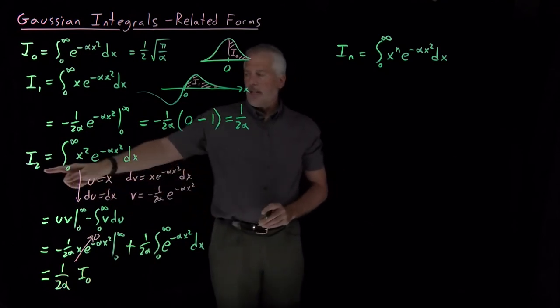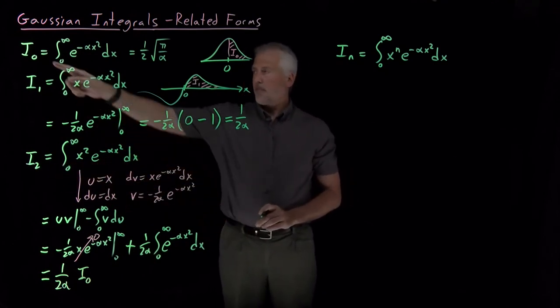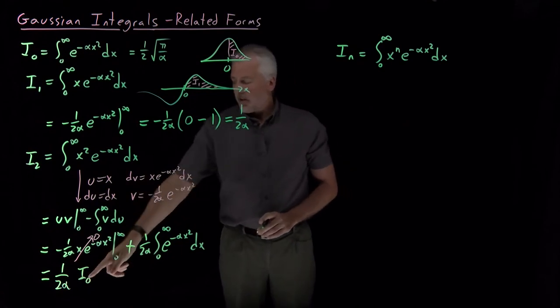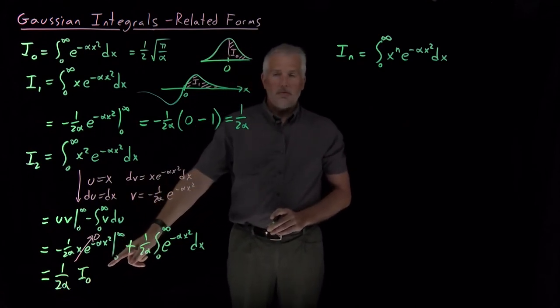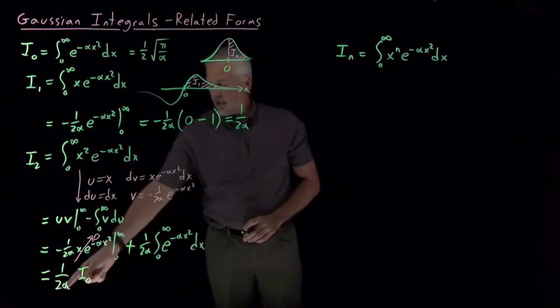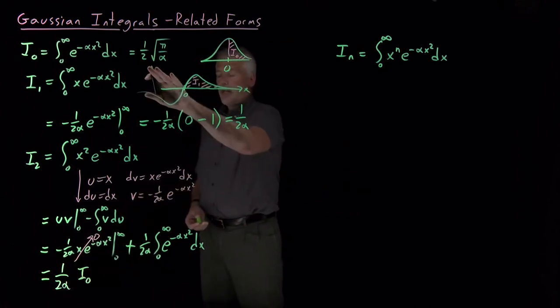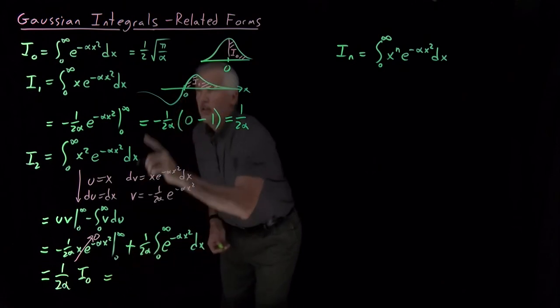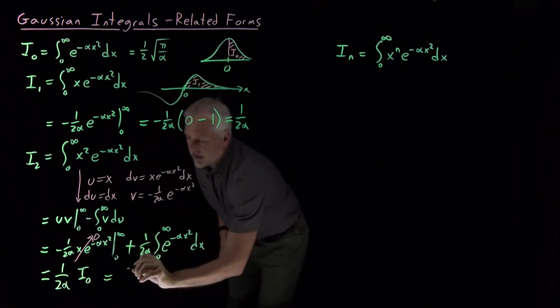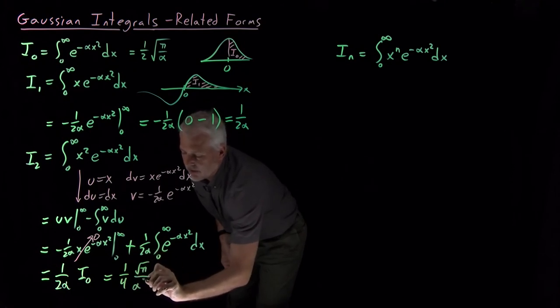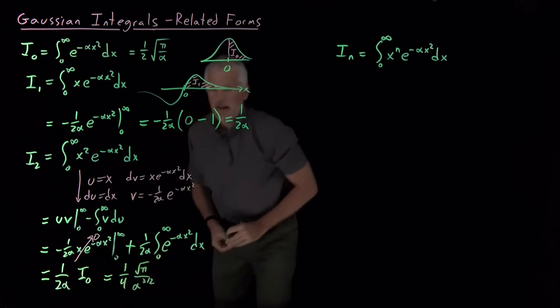So it turns out this I sub 2, the second, not the zeroth or the first, but the second one of these integrals is related to the zeroth one, the basic one for a plain Gaussian, just multiplied by an extra factor of 1/(2α). So if we care about the numerical value, that's 1/(2α) times this existing value. So now I have a 1/4. I still have a √π on top. And I have α^(3/2) on the bottom instead of 1/2.